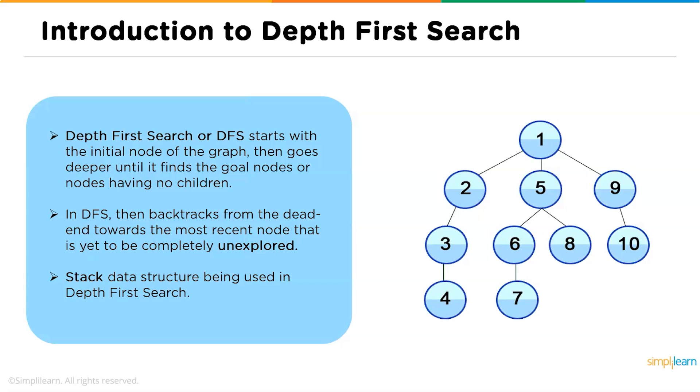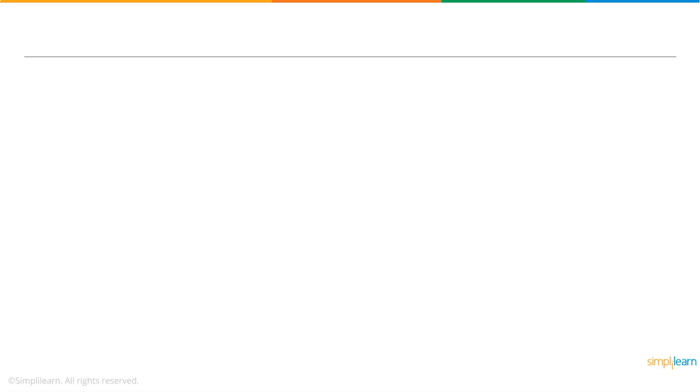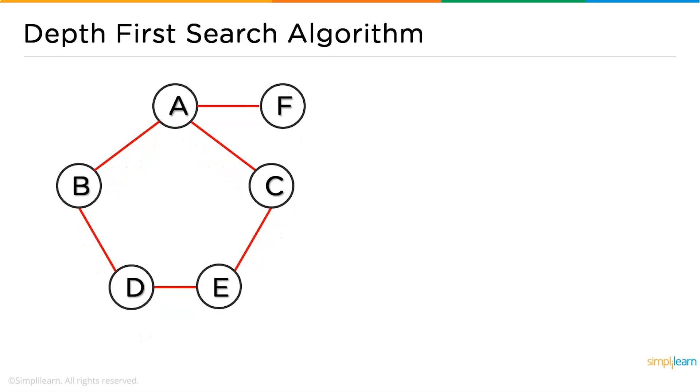Now for a better understanding, let's go through a practical example. So here we have a graph data structure with elements A, B, C, D, E, and F. We will be running the DFS algorithm and traversing through all the nodes of this particular graph.